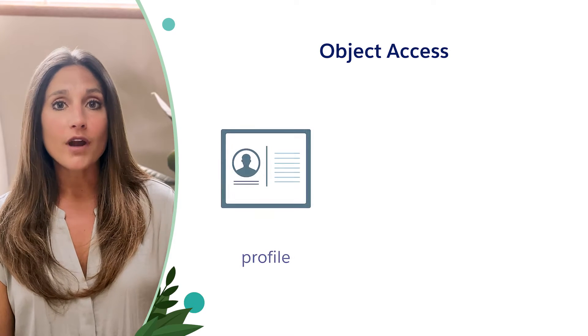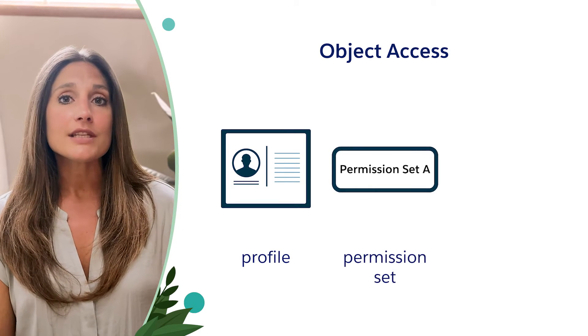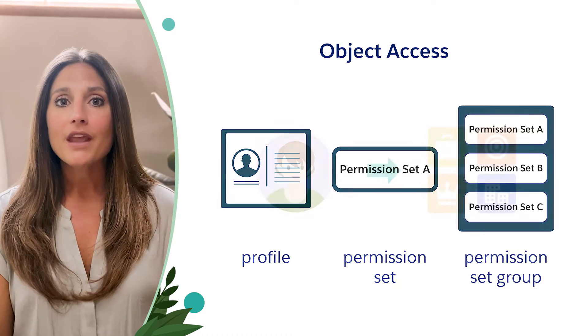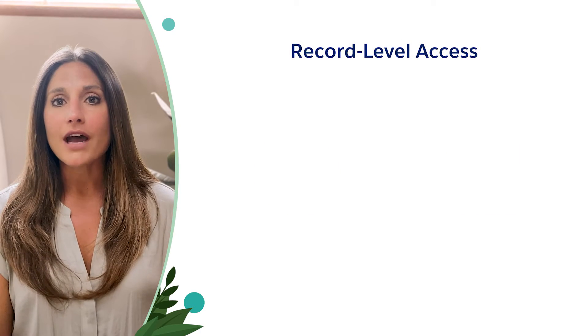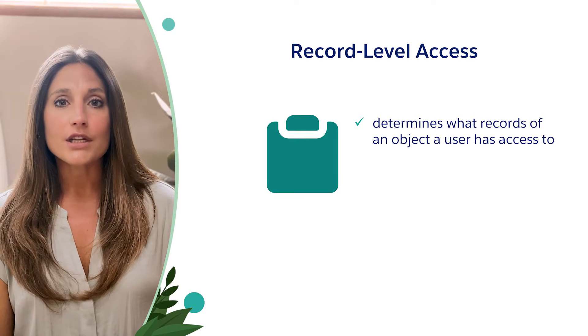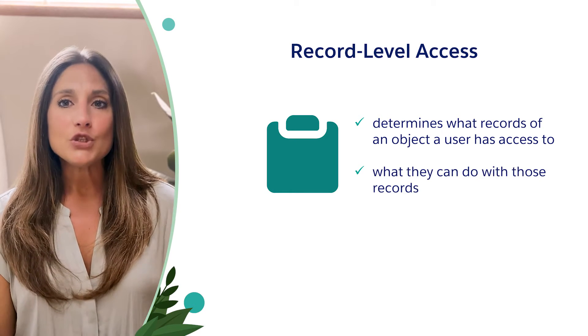Object permissions determine the kinds of records of the objects that users can view, create, edit, and delete, but not the individual records themselves. Record level access determines which individual records users can view and edit in each object that they have access to on their profile or through permission set and permission set group assignments. Object permissions can be assigned through a user's profile or through those same features with permission sets and permission set group assignments. Once the user has access to objects, the record level access determines what records of that object a user has access to and what they can do with those records.